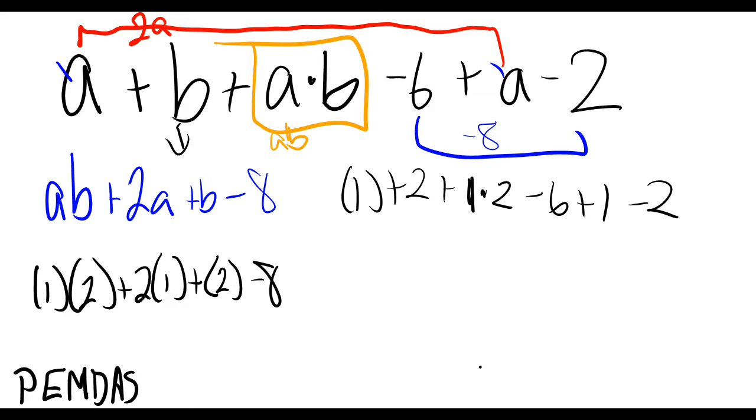All right, let's solve down here. 1 times 2 is 2, plus 2 times 1 is 2, plus 2, minus 8. All right, so 2, 4, 6, minus 8, equals negative 2.